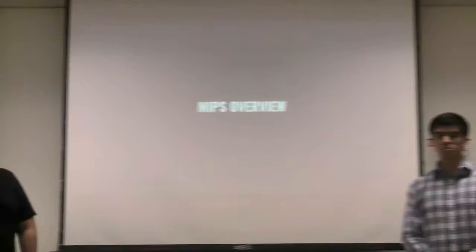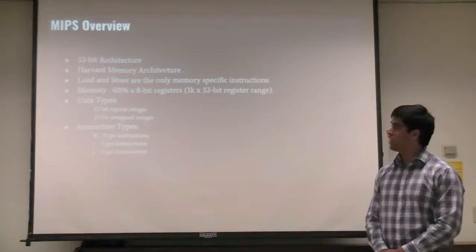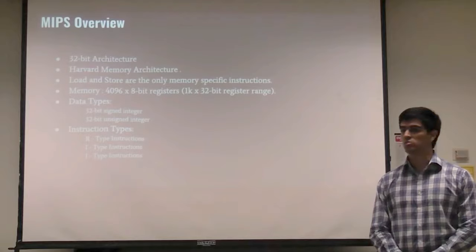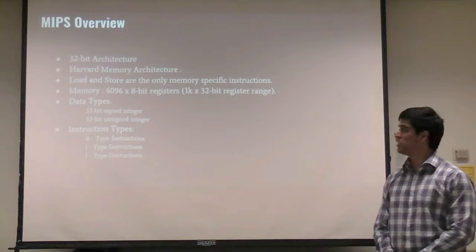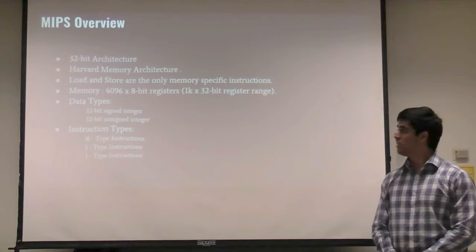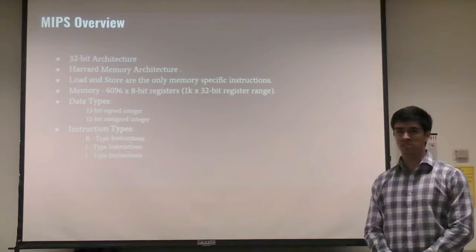So first we're going to be talking about the MIPS overview. It's a 32-bit architecture. It's a Harvard memory architecture, and the only way we can access the data inside the memory is by using load and store instructions. It's 4K by 8-bit, though we only use 1K because it's a 32-bit register, which takes up 4 bytes in memory. The data types we're going to be using are unsigned and signed integers.